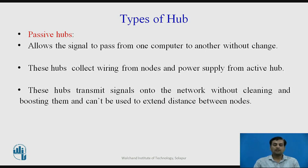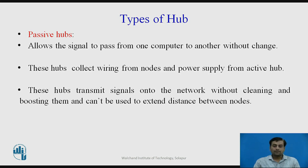A passive hub allows the signal to pass from one computer to another without any change. Passive hubs collect the wiring from the nodes and the power supply from an active hub — they do not have their own power supply. A passive hub transmits the signal on the network without cleaning or boosting it and cannot be used to extend the distance between nodes.